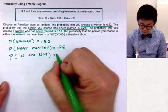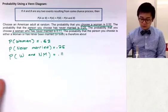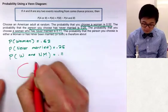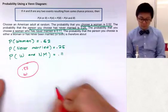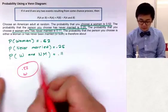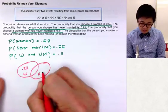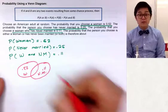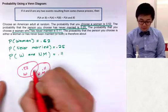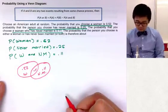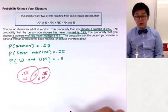In the Venn diagram, one circle represents the group of women — 52% of selections — and the other circle represents those who have never married — 25%. The intersection, representing women who have never married, is 0.11.